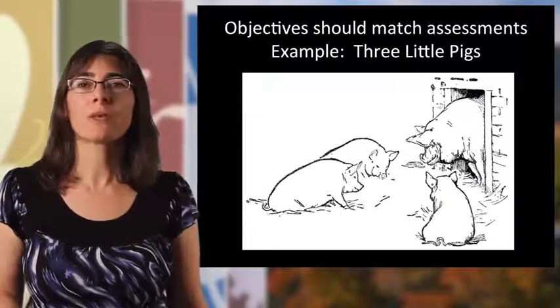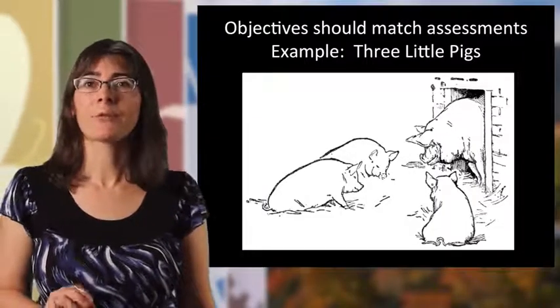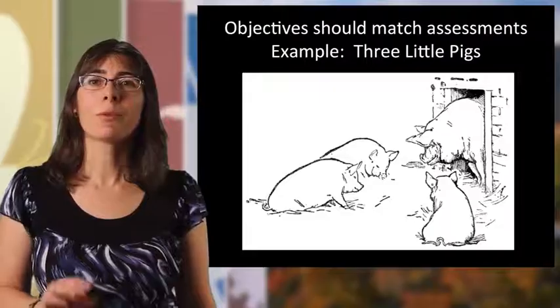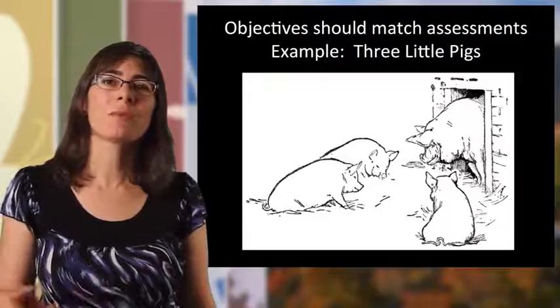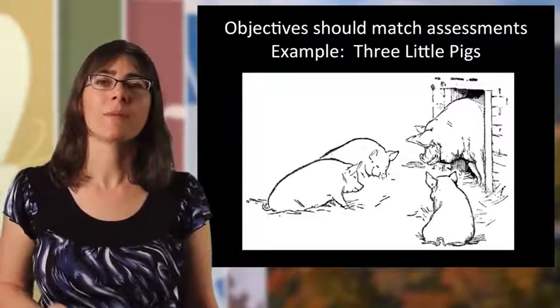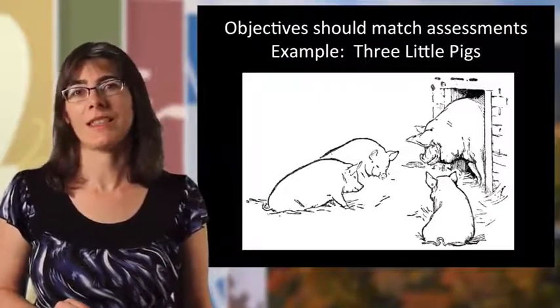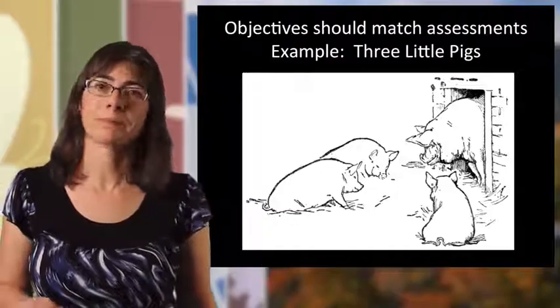But the third little pig was clever and he built a house of bricks. The wolf comes down the chimney into a pot of boiling water that the little pig has placed there, and then the wolf runs away.